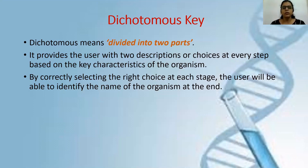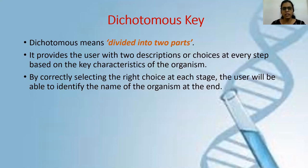The meaning of the word 'dichotomous' is divided into two parts. In this word, 'DI' refers to two. So in a dichotomous key, the users are always provided with two descriptions or two choices at every step. Out of these two choices, the user has to look at the organism and match the feature or characteristic which matches with the organism, and then go ahead.